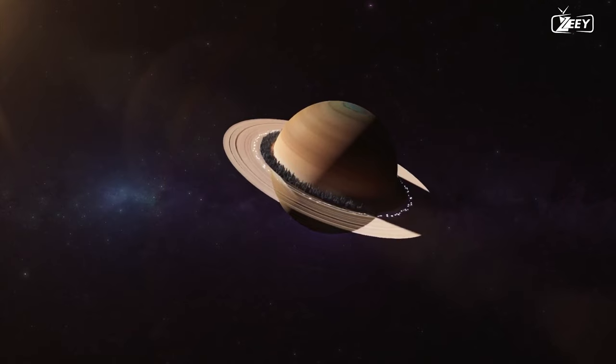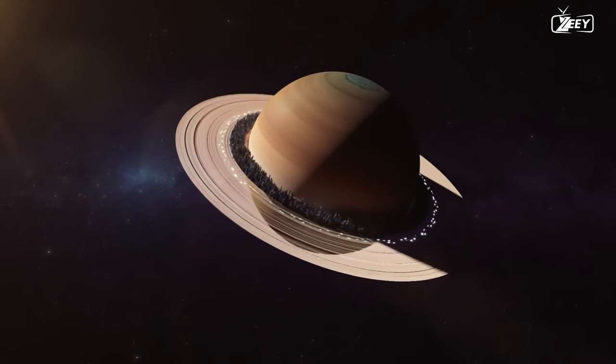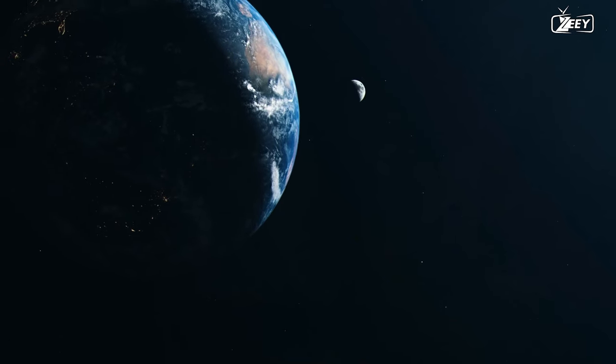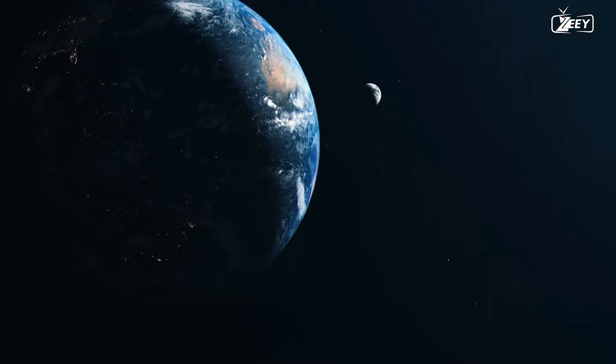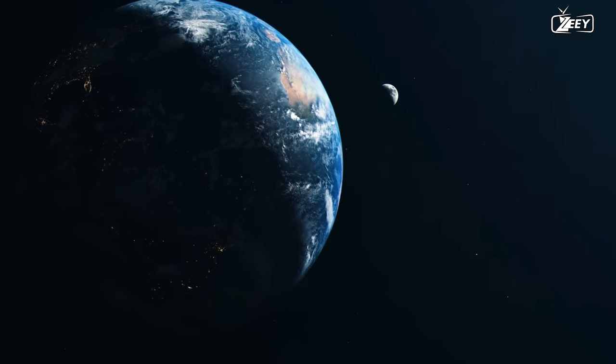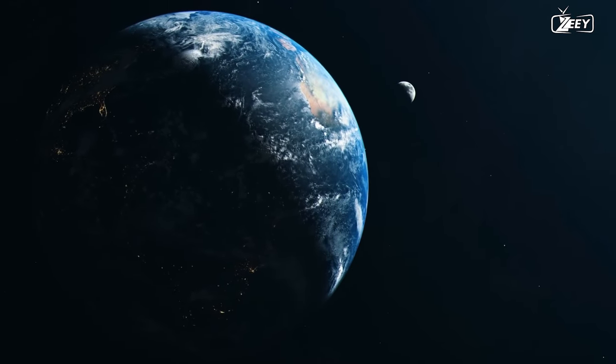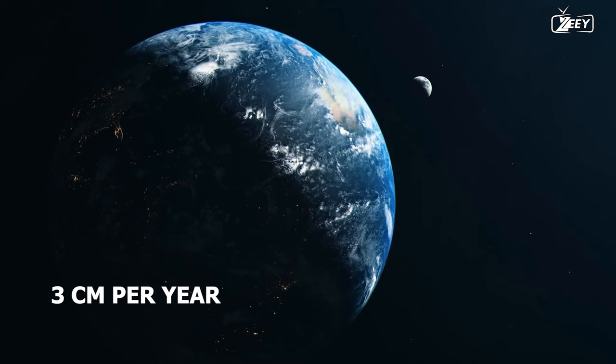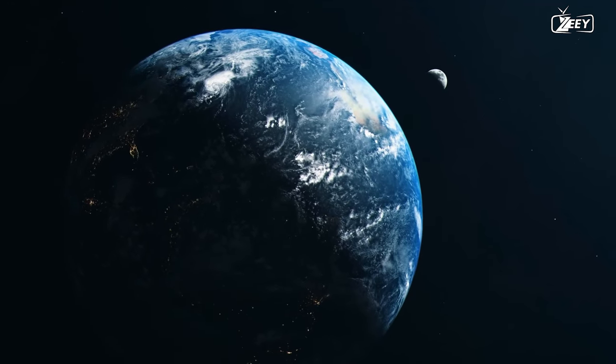Once the natural satellite that formed Saturn's rings reached the Roche limit, it was unable to escape and was destroyed, producing the rings we see today. In the case of Earth, the moon is very far from the Roche limit and we also know that it travels away from Earth at a rate of 3 cm per year, so it is certain that it will never form a ring of asteroids around our planet.